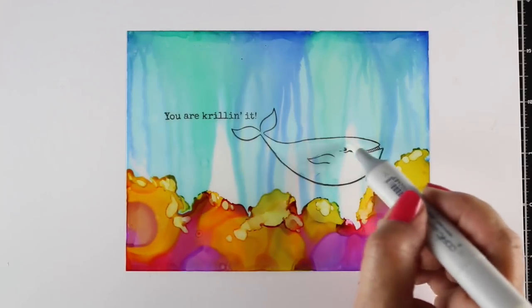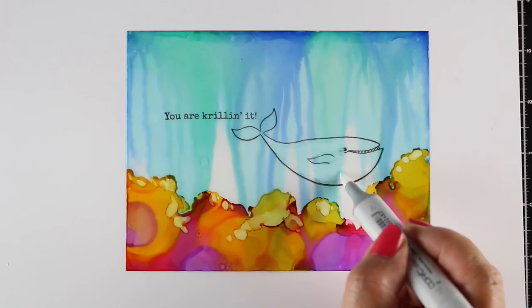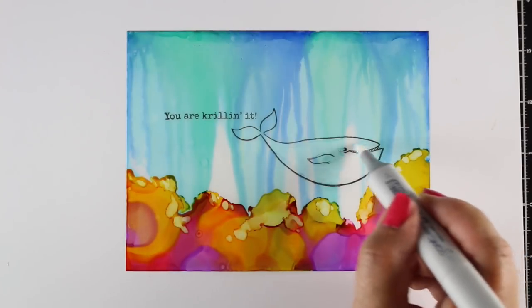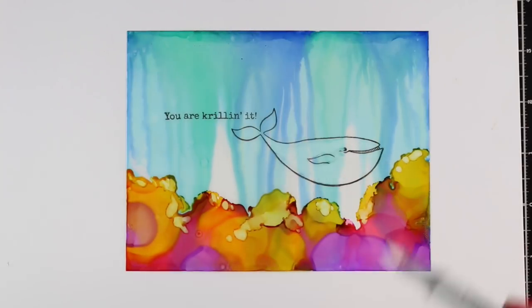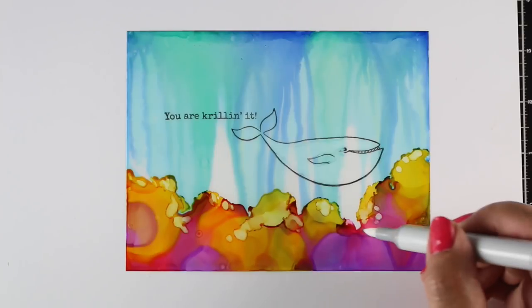The ink that I used here was Lawn Fawn's Jet Black ink. And I did try something like this with VersaFine, and the ink just kind of went mushed off with your finger. This ink did stay put, so that was nice to know. And there we go. I just kind of cleaned up that whale quite nicely, and that worked.